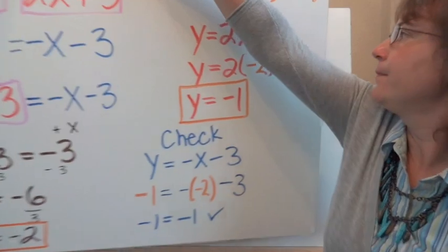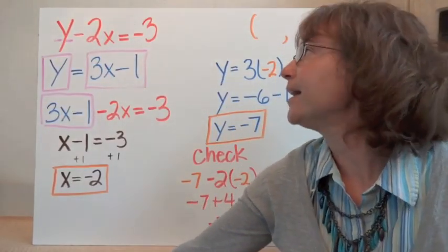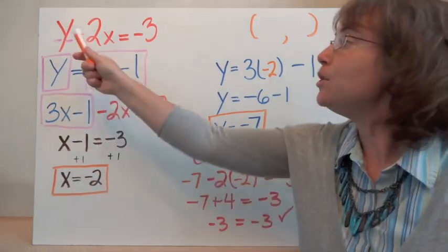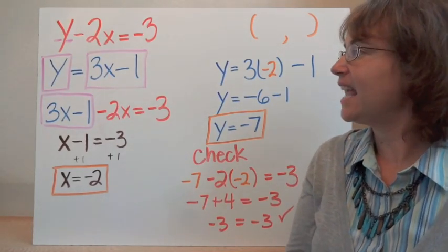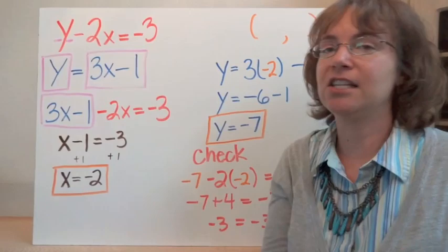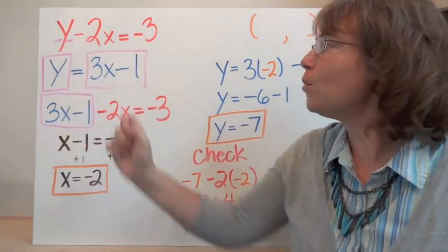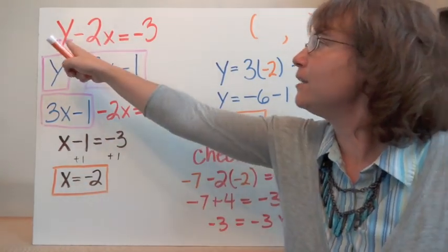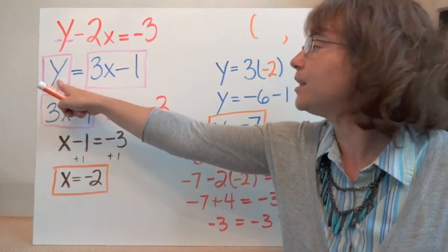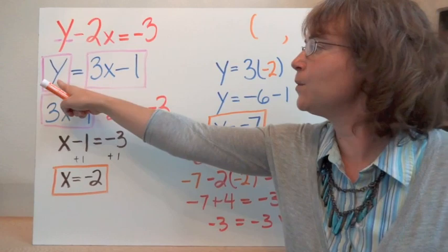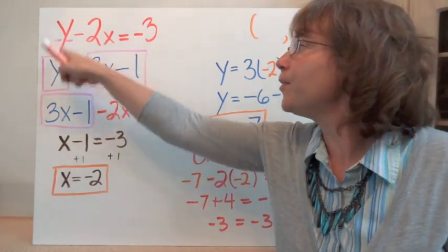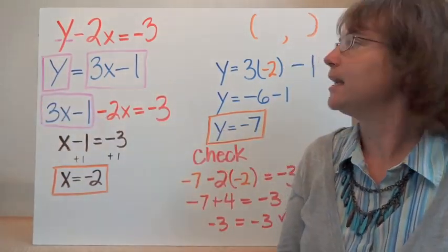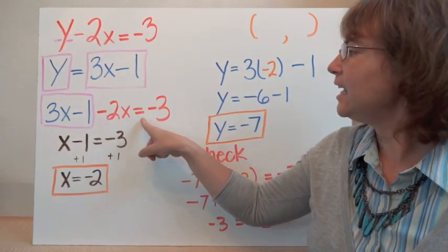Let's look at another example. We have y minus 2x equals negative 3, and we have y equals 3x plus 1. Notice both of them don't have y isolated in the first equation. In this case, I'm going to use the second one to substitute into the first equation because it's already solved for y. So instead of y in the first equation, I'm going to replace it with 3x plus 1, giving us 3x plus 1 minus 2x equals negative 3.